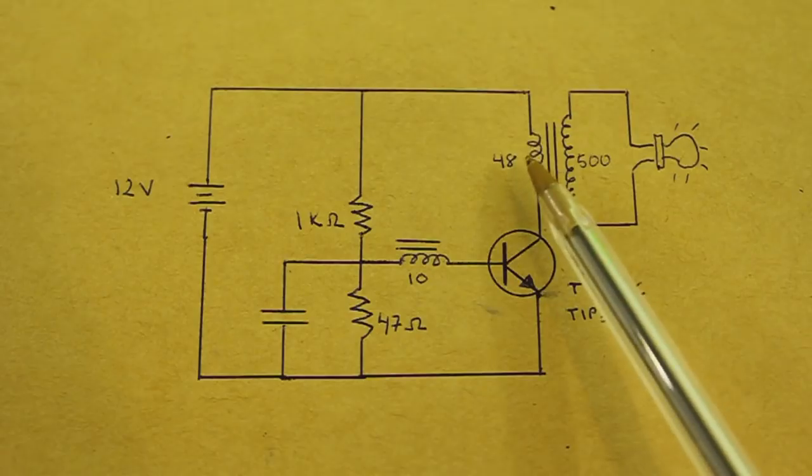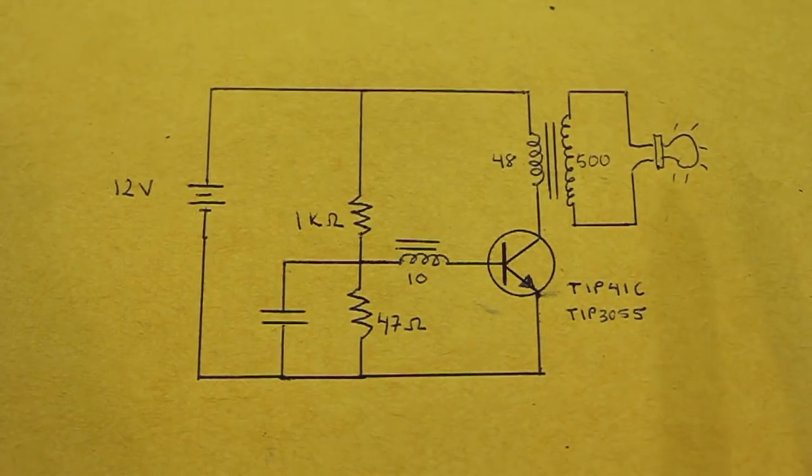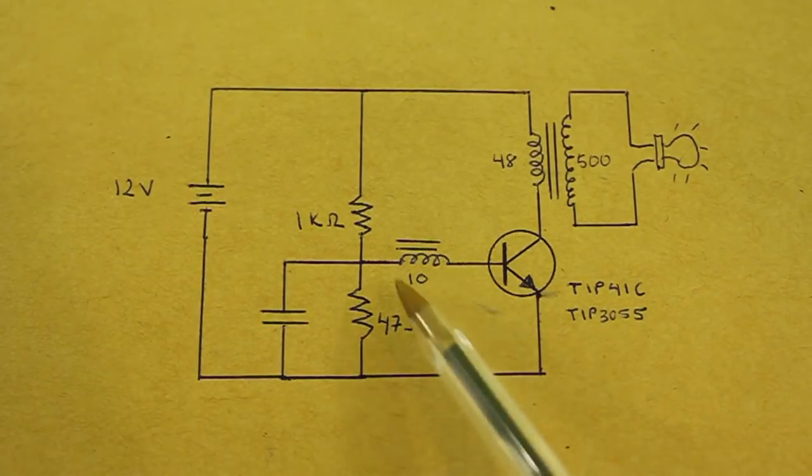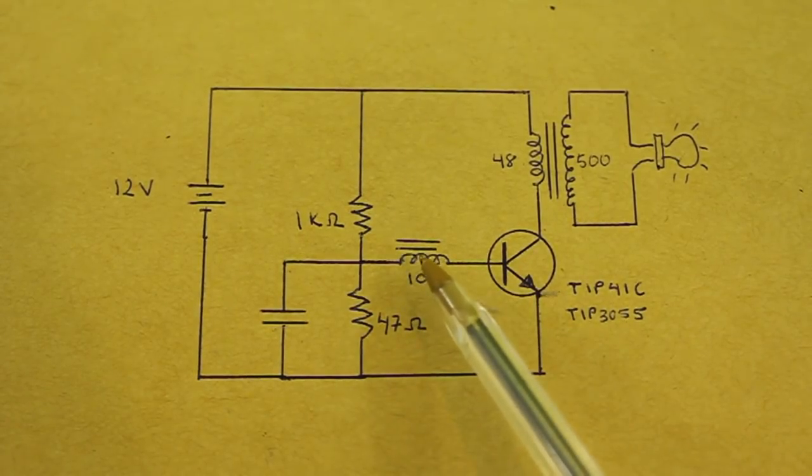This creates a magnetic field that starts to increase and in turn it induces a voltage on the feedback coil.